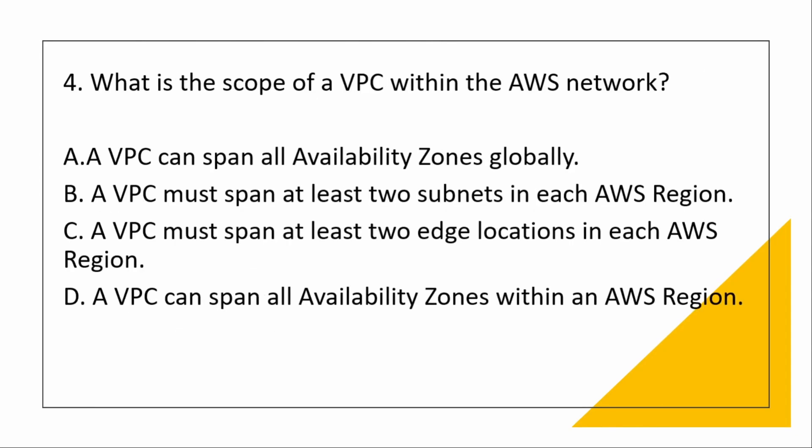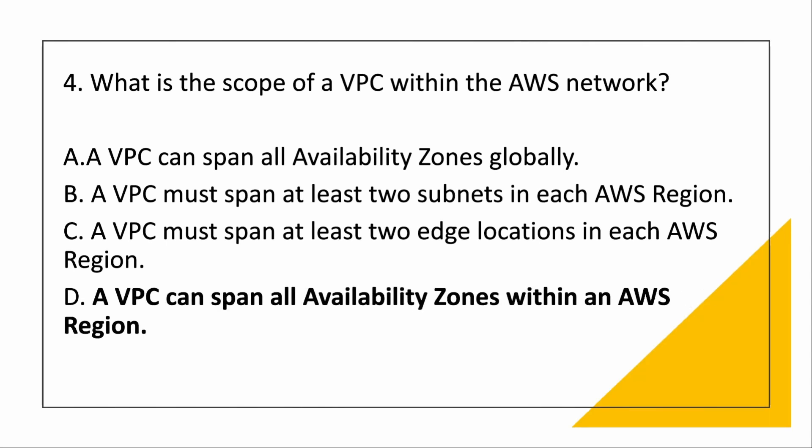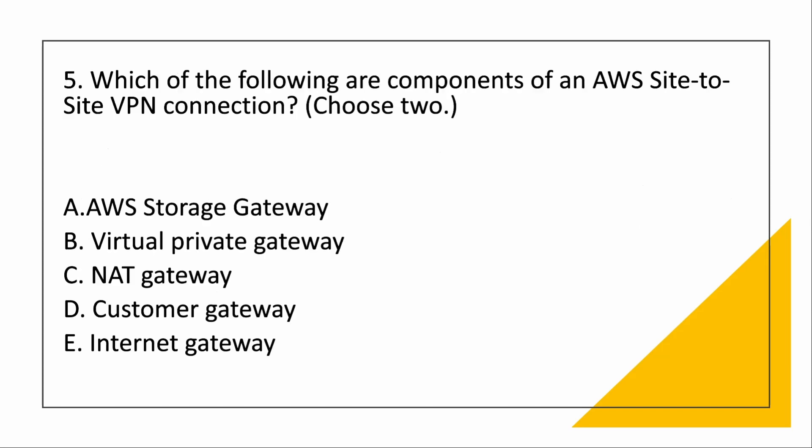What is the scope of a VPC within the AWS network? A VPC is a logically isolated piece of the AWS cloud dedicated to your company. You can run your applications in it, with infrastructure managed by AWS. A VPC belongs to a region and spans all Availability Zones. The correct answer is: a VPC can span all AZs within an AWS region.